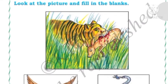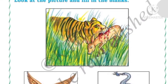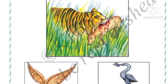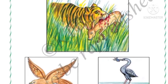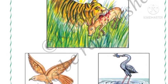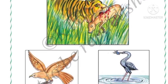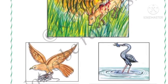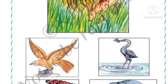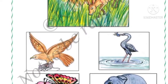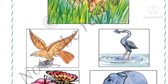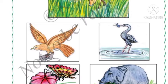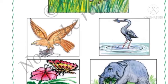Look at these pictures. You can see the tiger is holding the deer with the help of its teeth. The kite — which is an eagle — is holding the rat with the help of its claws. The crane is holding the fish with the help of its beak. The butterfly is sucking the nectar of the flower with the help of its proboscis.